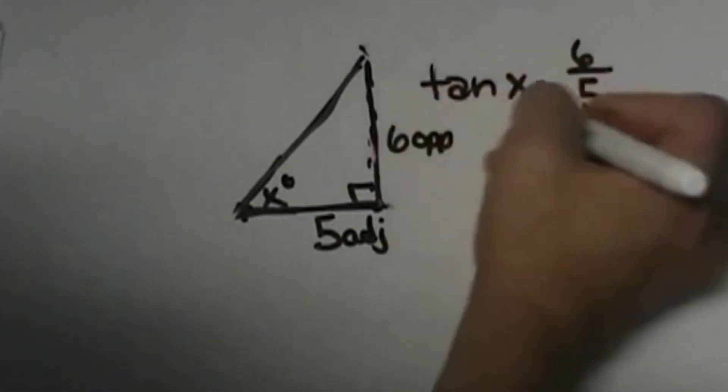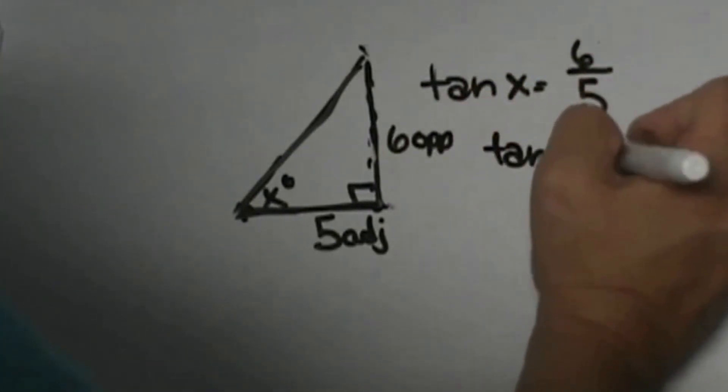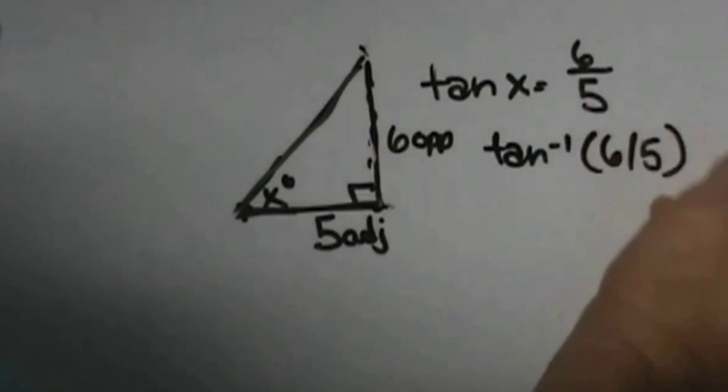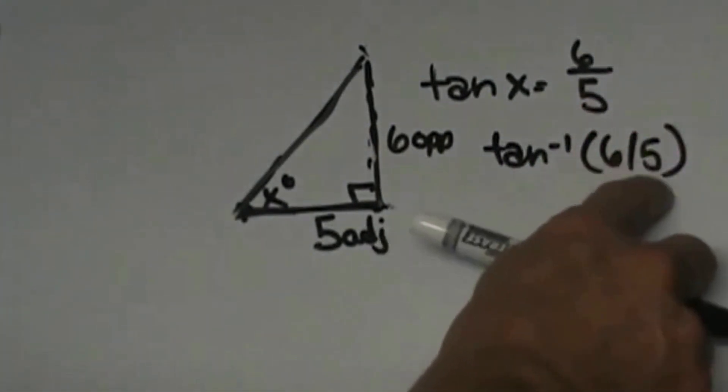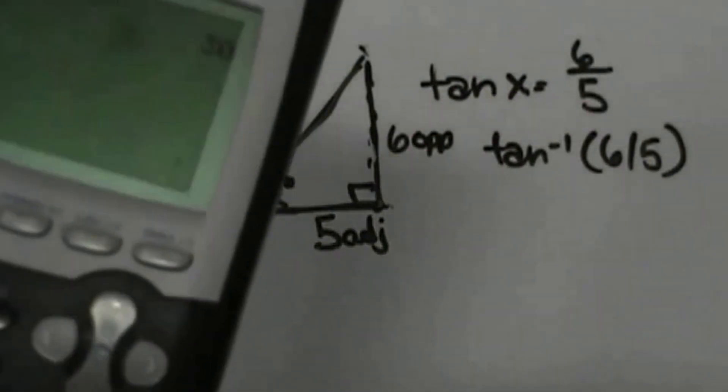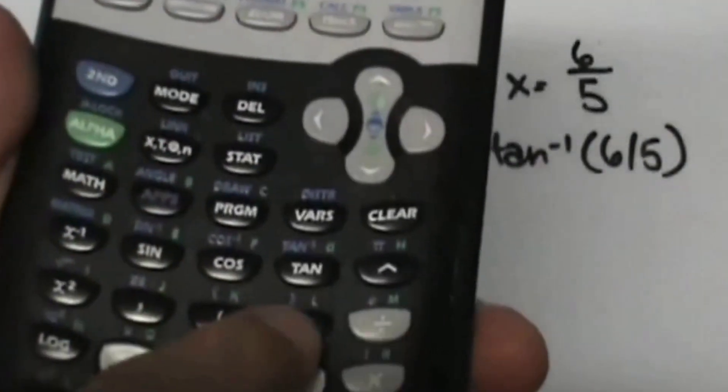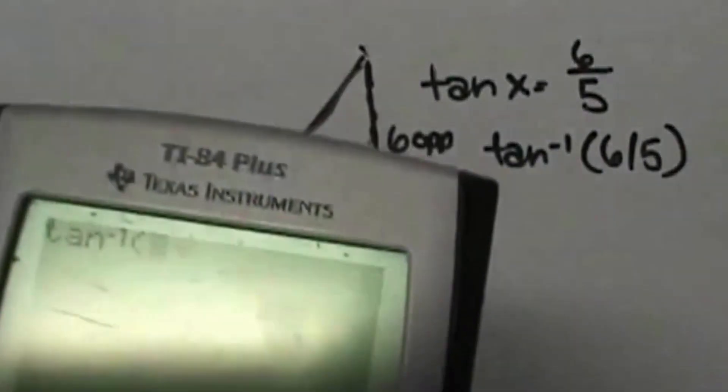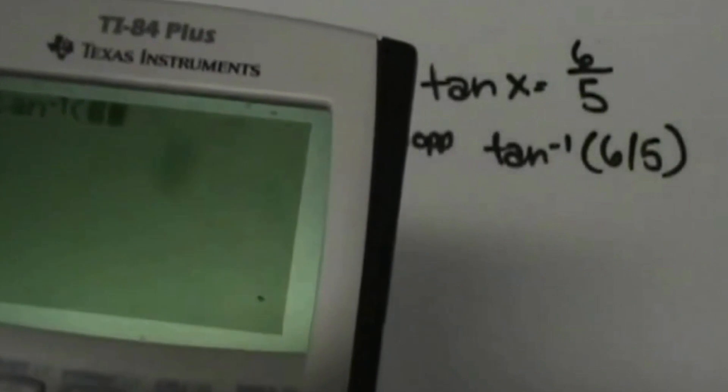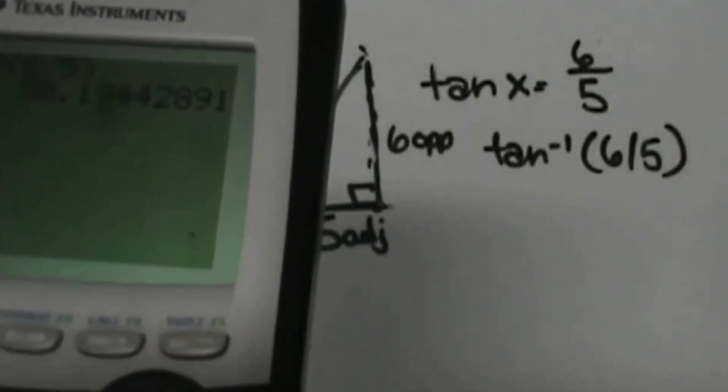Okay, let's work the inverse tangent of 6 over 5, and you put in 6 divided by 5, top divided by bottom. Grab your calculator and we are going to take second tangent, get our inverse tan of 6 divided by 5, and we get 50.1.